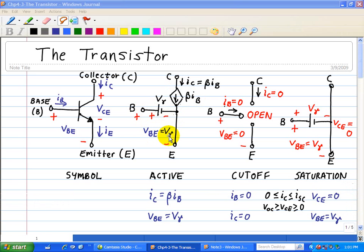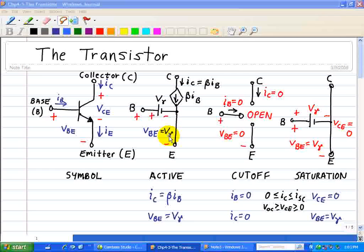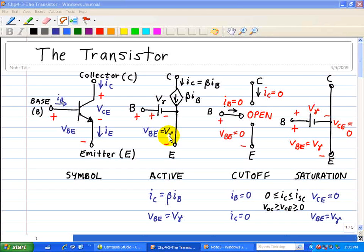We have two additional operating modes at the boundary of the BJT's operating region. When IB equals zero, that implies that IC equals zero. In this mode, the transistor is cut off, and the device acts like an open circuit between the collector and emitter. This is known as the cutoff mode.